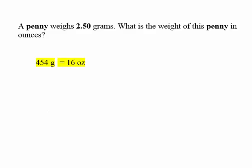In the next problem, we need to convert 2.5 grams to ounces. The conversion factor is 454 grams equals 16 ounces. Using dimensional analysis: 2.5 grams times 16 ounces over 454 grams. After the grams cancel, the math is 2.5 times 16 divided by 454, which equals 0.0881 ounces.